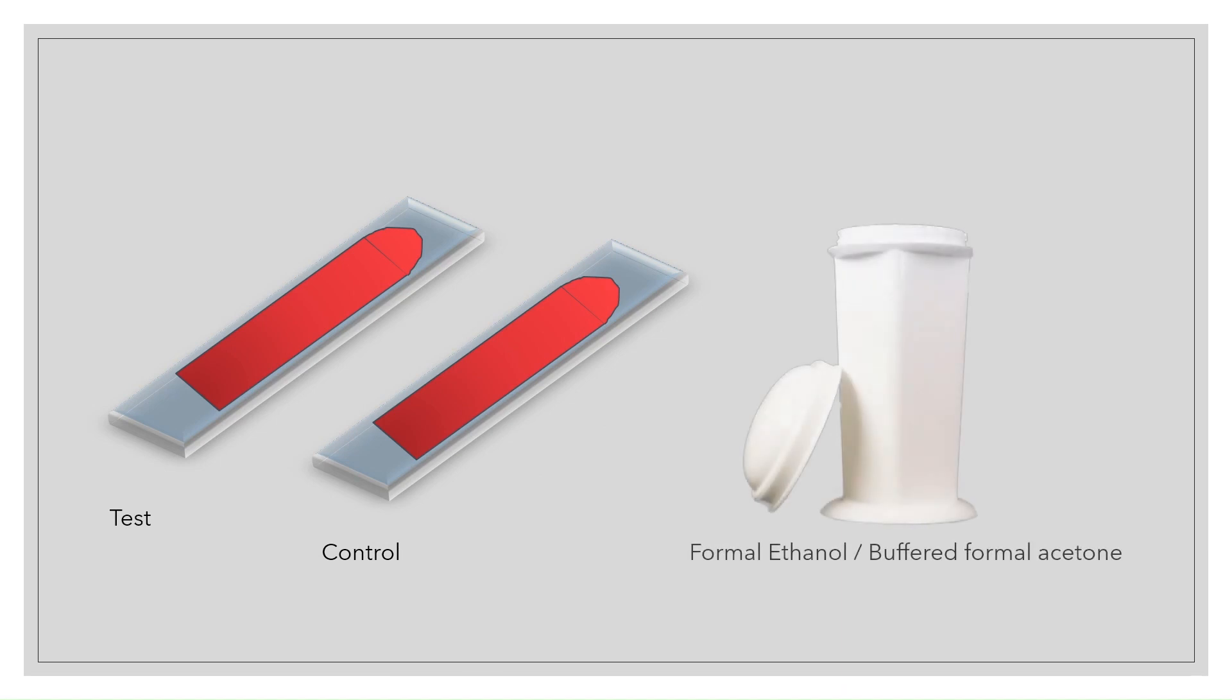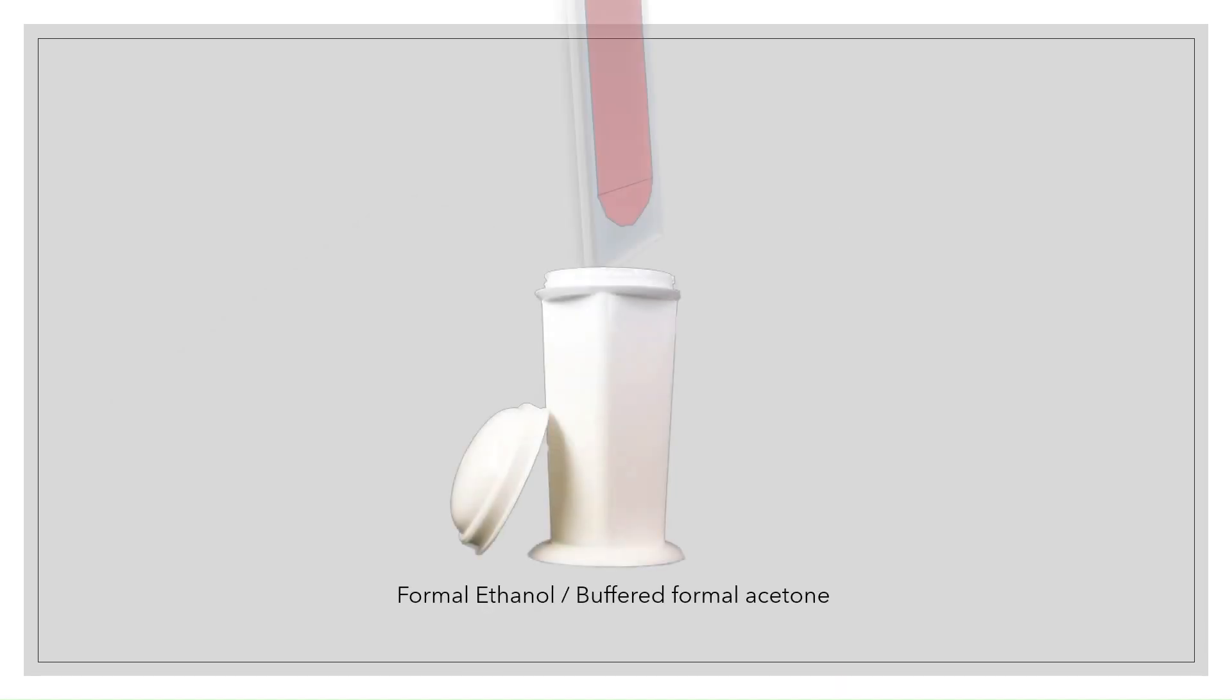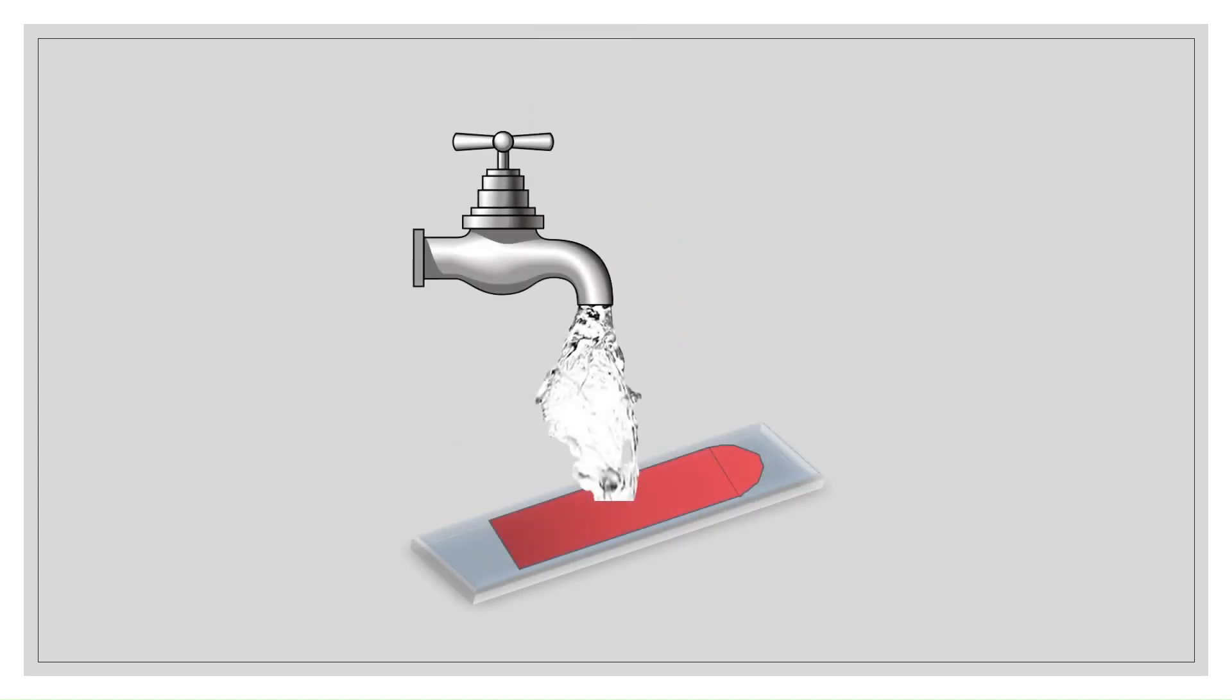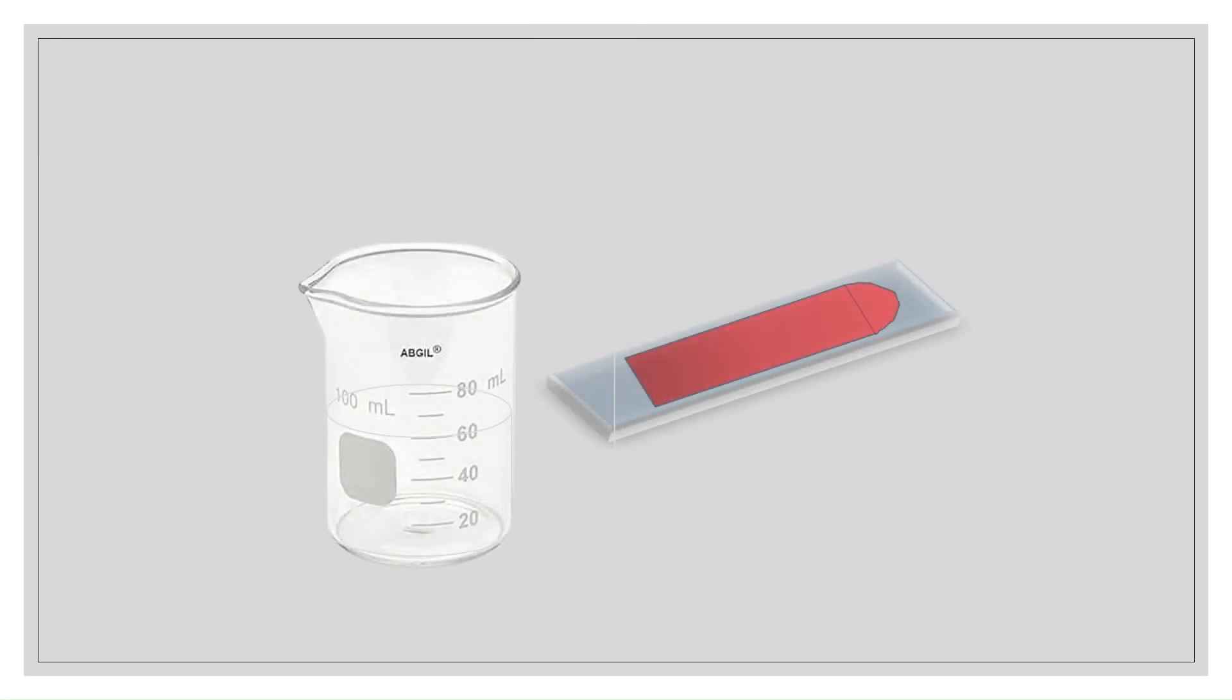Let's see the procedure. Fix the air-dried test and control smear in the formal ethanol or buffered formal acetone for 60 seconds. Rinse in running tap water for 30 seconds. Put the working substrate on the smear and incubate for 10 minutes.